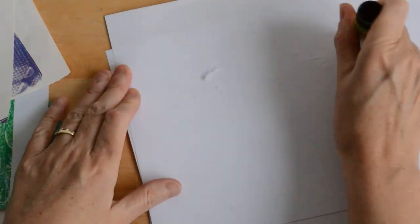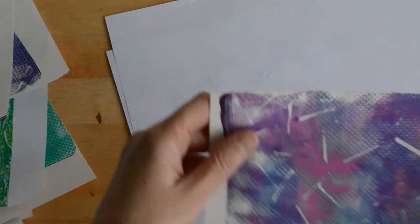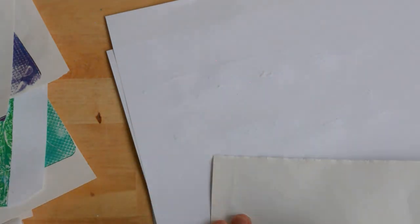First up, I'm going to layer two of the different purple prints together onto a base paper and use that to cut a bauble shape from.